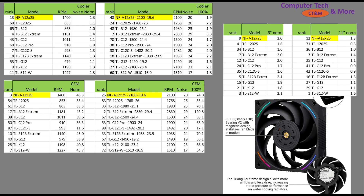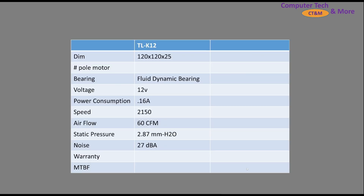Then a little spec information: it has a fluid dynamic bearing—they call it version 2. Overall, it looks like a pretty interesting fan with very subtle RGB. Let's continue on.